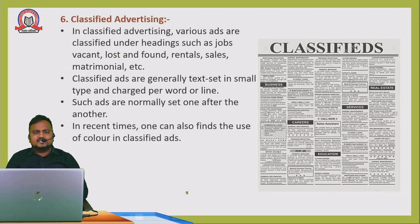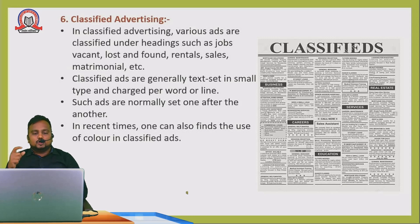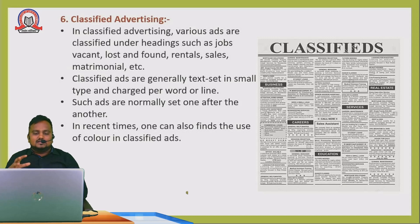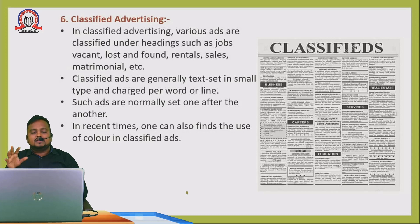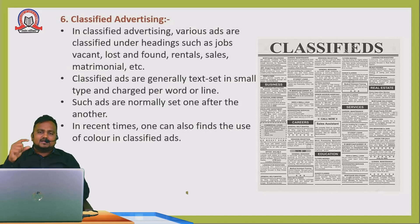Another type is classified advertising. You would see it in small boxes. Various ads are classified under headings such as jobs, vacancy, lost and found, rentals, sales, matrimonial, etc. Some are for businesses, some for vacancies. The charges are small and ads are normally set one after another. In recent times, colors are also used in classified ads. The key thing to understand is that classified advertising appears in small boxes.